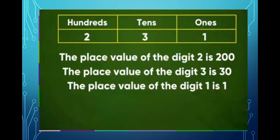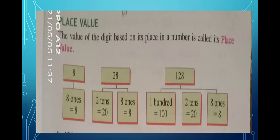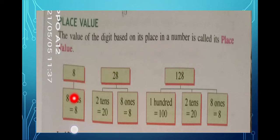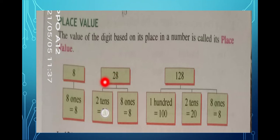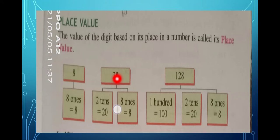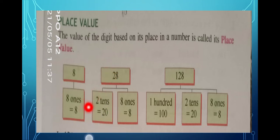Now I will explain with the help of your book. The value of the digit based on its place in a number is called its place value. For example, 8 means eight ones. In 28, eight is in the ones place and two is in the tens place, so eight ones. Two is in the tens place, so two tens, which equals twenty.